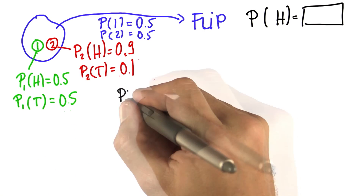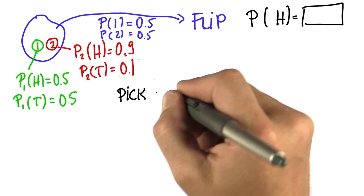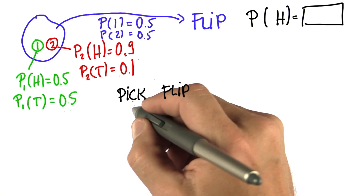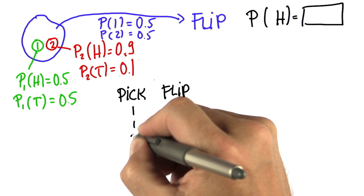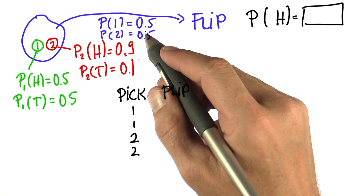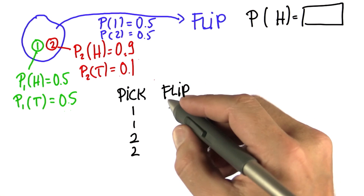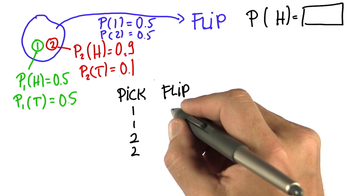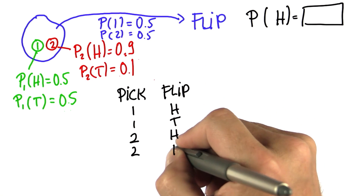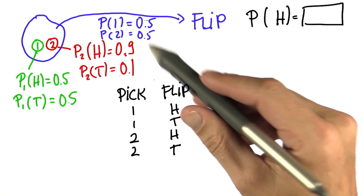Let's do the truth table. We have a pick event followed by a flip event. We can pick coin one or coin two, with a 0.5 chance for each coin. Then we can flip and get heads or tails for the coin we've chosen.